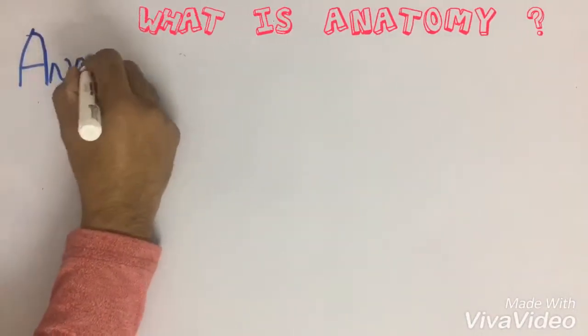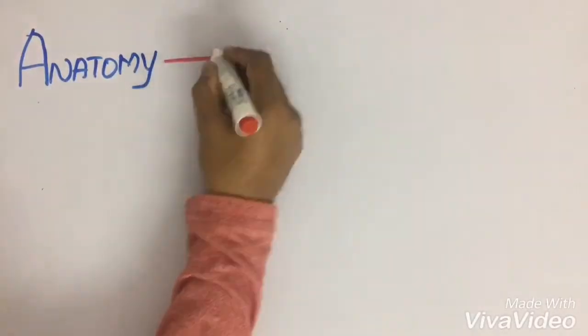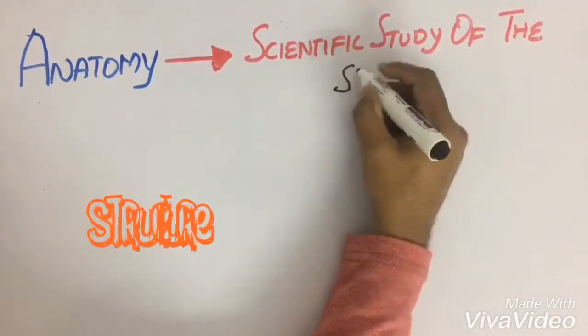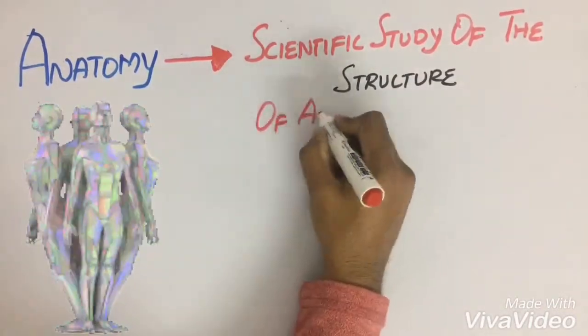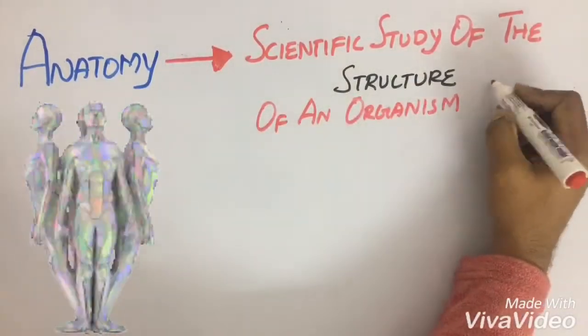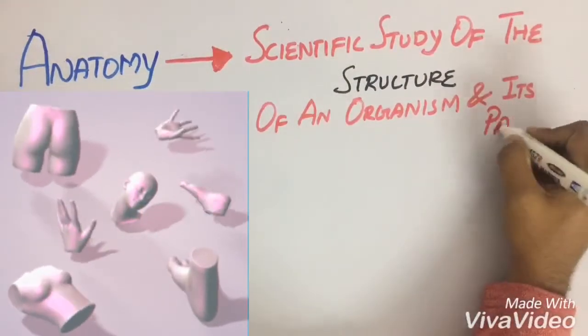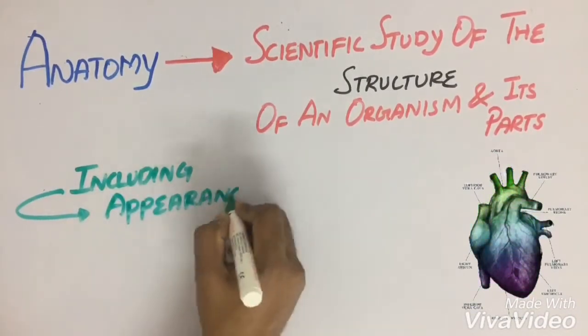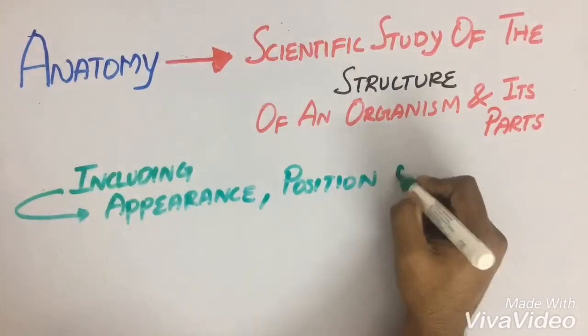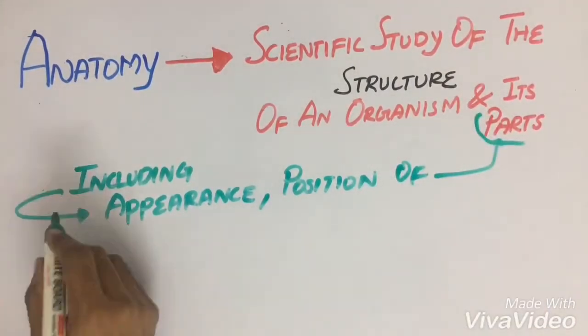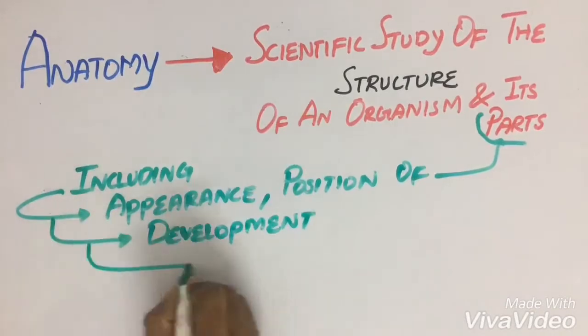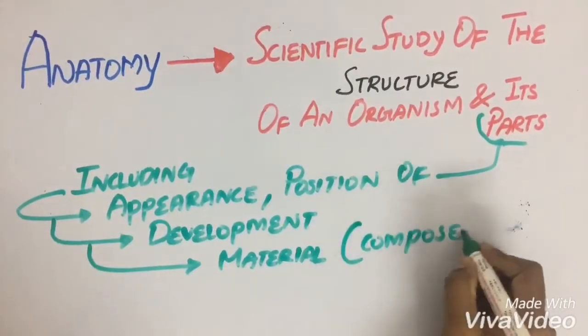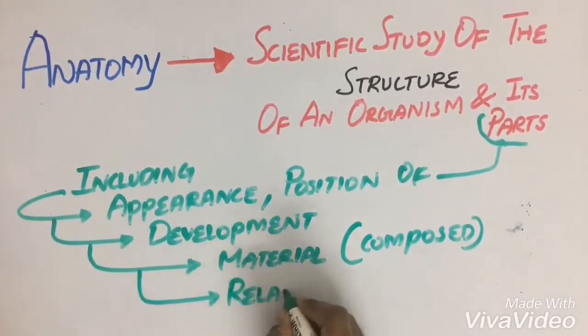Anatomy is the scientific study of the structure of an organism and its parts. This includes the appearance, position of various parts, the development, the material which they are composed of, and the relationship with the other parts.